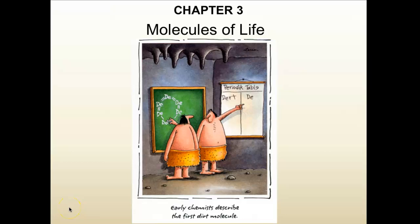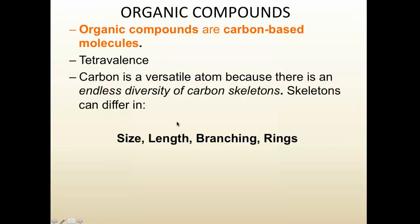This is Chapter 3, which deals with macromolecules. We'll be going through what it means to be an organic molecule and what the four different kinds of macromolecules are. These early chemists in this cartoon are describing the first dirt molecule — you can see they have double bonds and single bonds between their little dirt symbols. Organic molecules, or organic compounds, are carbon-based molecules.